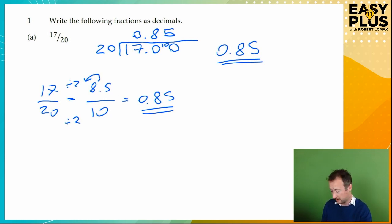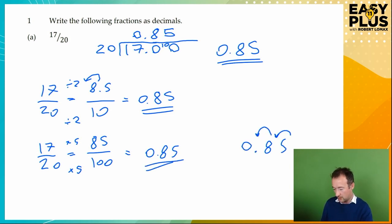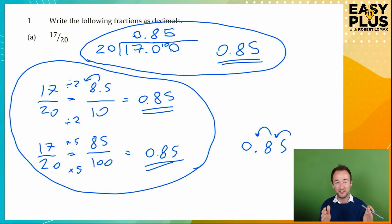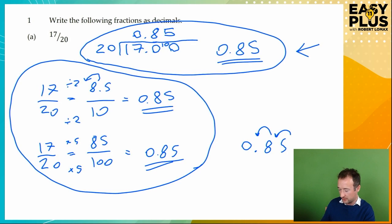One last thing you could do with this, because it's over 20, you could turn it into a fraction over 100. Now, I think there's one method to really remember here. It's this one, because you can use this for any fraction at all, whereas these two methods down here depend on the fact that 20 is a really nice, neat number that you can easily convert into 10 or 100 by dividing by 2 or by multiplying it by 5. So look out for these opportunities, but this method here is the winner. Remember that, and you can always use it. Okay, let's push on.